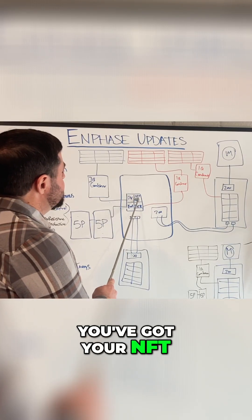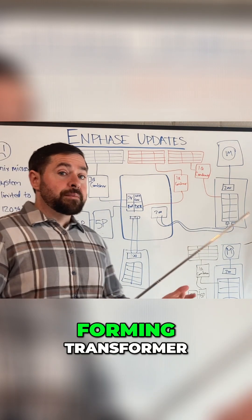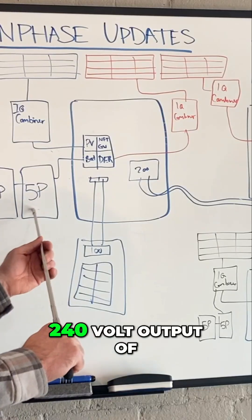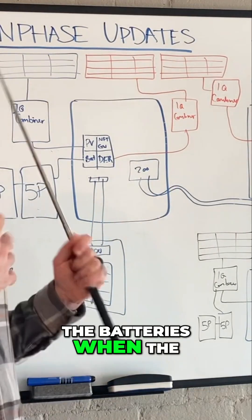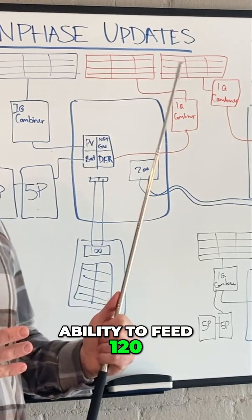Next, you've got your NFT breaker up here in the upper right. That is a neutral forming transformer. That's what takes the 240 volt output of the batteries when the system is off grid and gives it the ability to feed 120 volt loads.